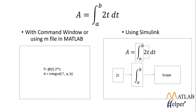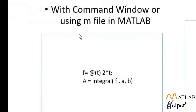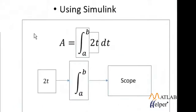Suppose you have a system which integrates your input and gives you an output A. In order to perform this system in MATLAB, you have two ways: either you can use the command window or an M file and write a bunch of lines of code to perform your system, or you can use Simulink. In Simulink, you will divide each element of the system into blocks, connect your blocks, and directly see what will be the output of the system.